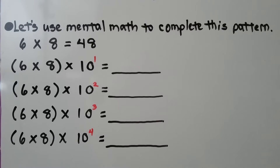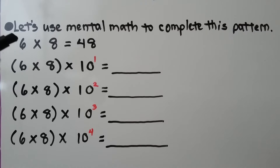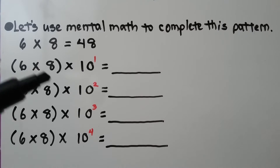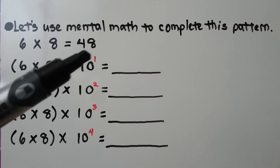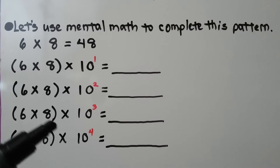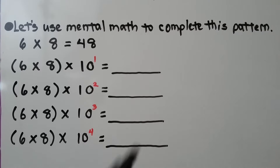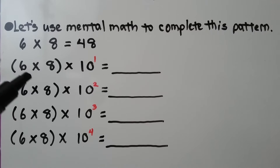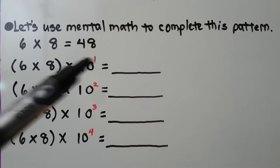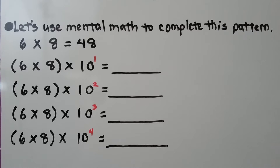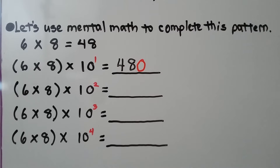Let's use mental math to complete this pattern. We have 6 times 8 equals 48 as our basic fact. Then it's multiplied by 10 to the first power, 10 to the second, 10 to the third, 10 to the fourth — and we fill in the blanks. 6 times 8 times 10 to the first power: that's 48 with one zero, which is 480.